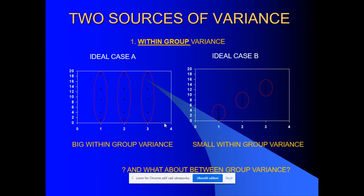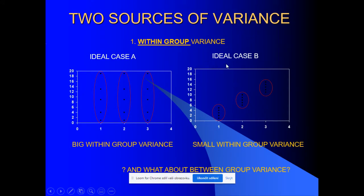There are two sources of variance. The first can be named as the within-group variance — variance inside each group. For ideal case A, there are quite big differences for individual values inside groups, so the within-group variance is quite large. For ideal case B, values are quite close to each other within individual groups, so the within-group variance is small. The question is: how big is the between-group variance — the second source of variance?